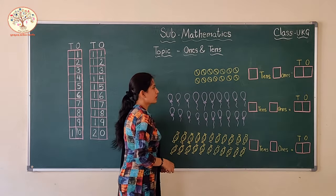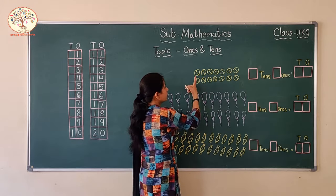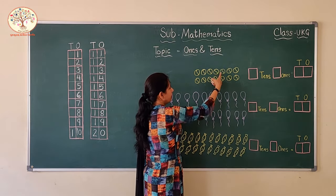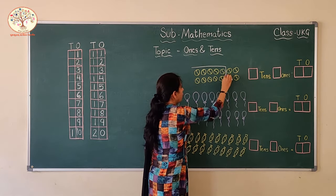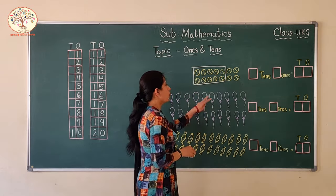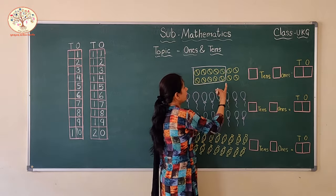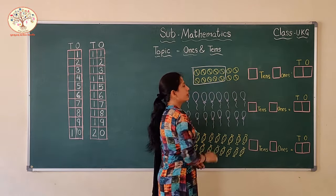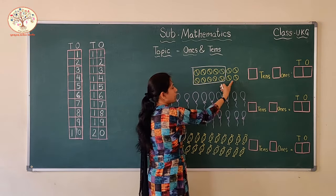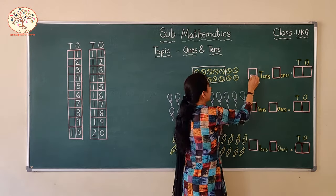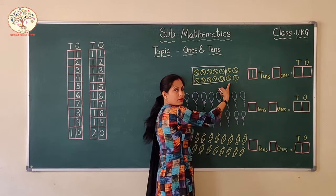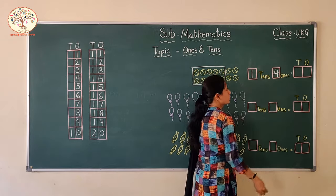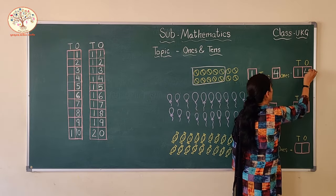I have drawn some pictures here. We will pick tens from these balls. Count the balls: 1, 2, 3, 4, 5, 6, 7, 8, 9, 10 — I am making a bundle of 10. How many bundles? 1 bundle — 1 ten. And how many balls are remaining? 1, 2, 3, 4 — these are not 10, so we can't group them. So: 1 ten and 4 ones — we write 1 in the 10s column and 4 in the 1s column. Combined: 14.